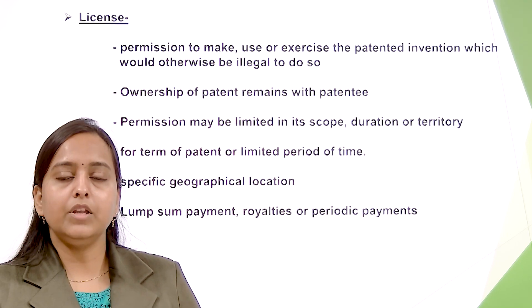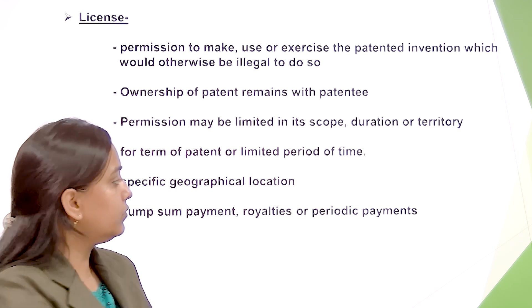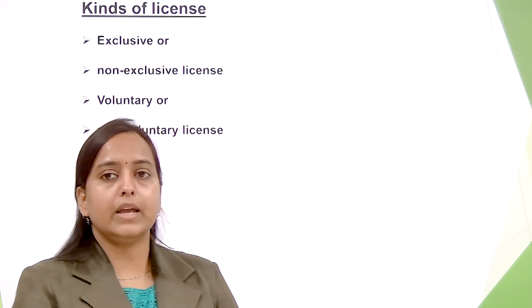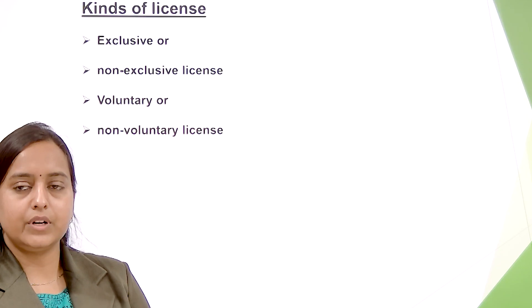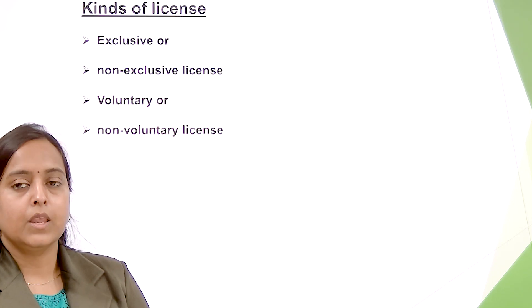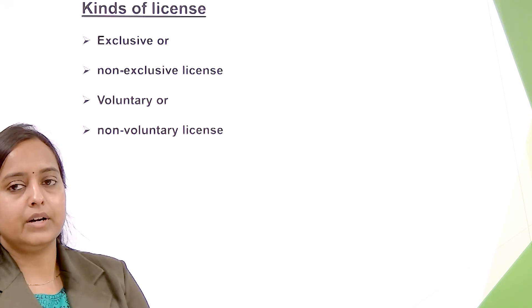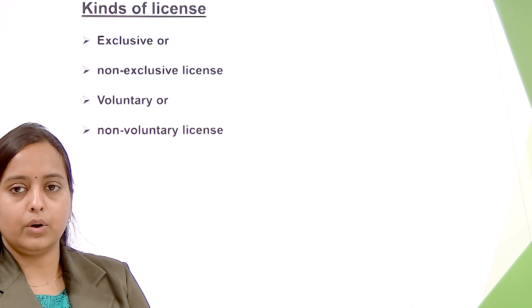The patentee may charge a lump sum payment or receive royalties or periodic payments. A license may be exclusive or non-exclusive. If it is granted to one person, it is an exclusive license; if it is granted to more than one person, it is a non-exclusive license. A license may also be voluntary or non-voluntary. If it is granted by the patent holder himself, it is a voluntary license.